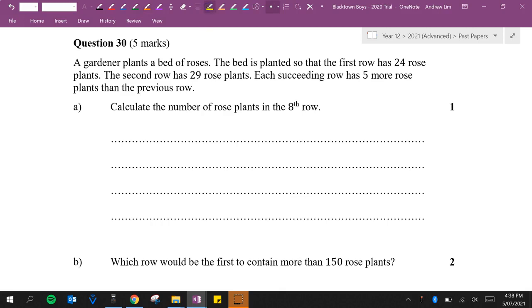So this line here, each succeeding row has five more than before, that tells us that it's an AP not a GP. So there's a common difference of five.